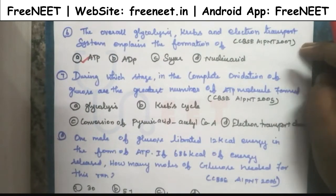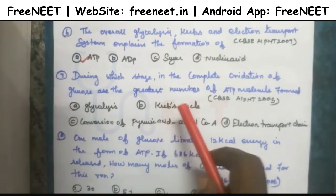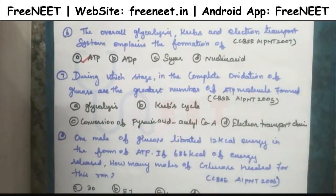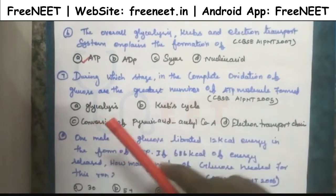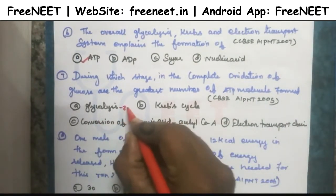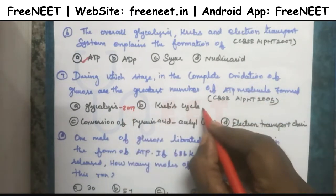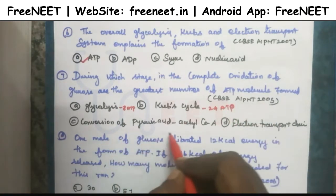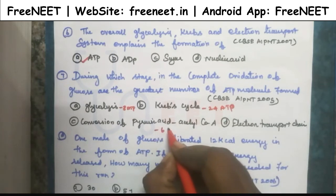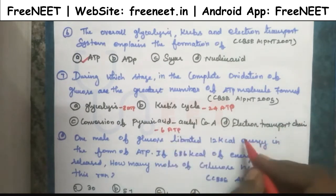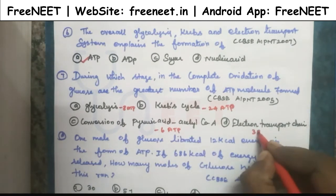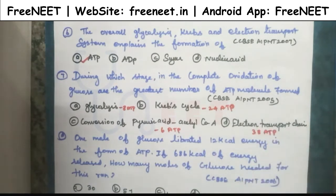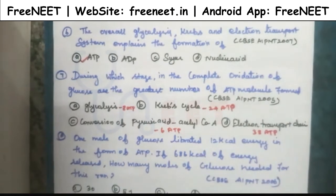The next question: during which stage in the complete oxidation of glucose is the greatest number of ATP molecules formed? From glycolysis we get 8 ATP, from the Krebs cycle we get 24 ATP, from the conversion of pyruvic acid to acetyl coenzyme A we get 6 ATP, and from the electron transport chain we get 34 ATP. So the greatest number of ATP is formed in the electron transport chain.